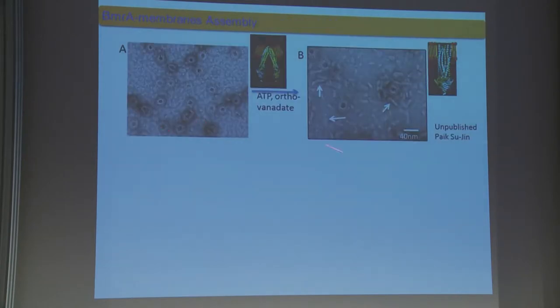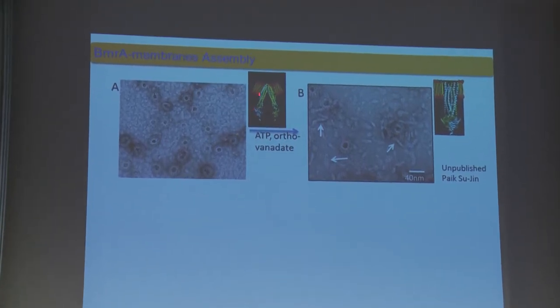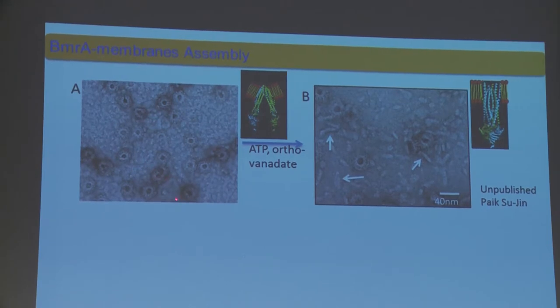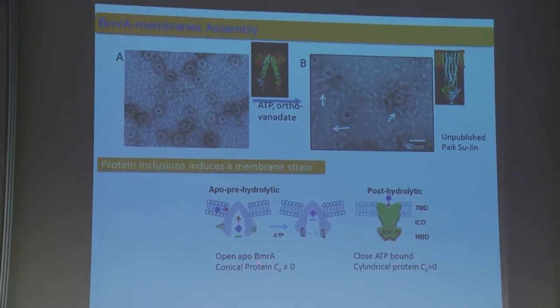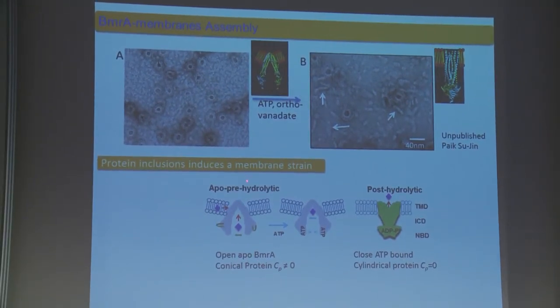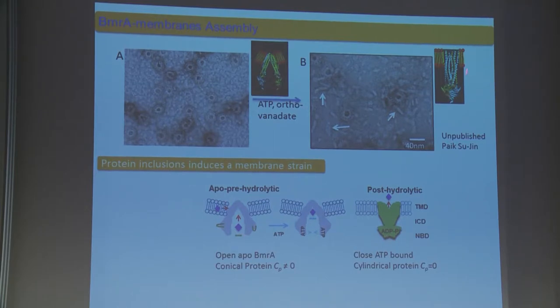Recently in Daniel Levy's group, it was shown that the open conformation which is conical has a spherical arrangement forming ring-like structures, whereas when you inhibit by ortho-vanadate, the ATP cycle gets arrested and you have a cylinder-shaped protein that usually ends up getting a ribbon-like structure. When there's a protein inclusion with curvature in a conical shape, you have membrane strain, whereas cylindrical proteins with no curvature have no membrane strain.